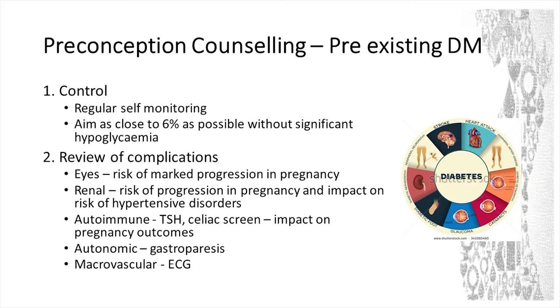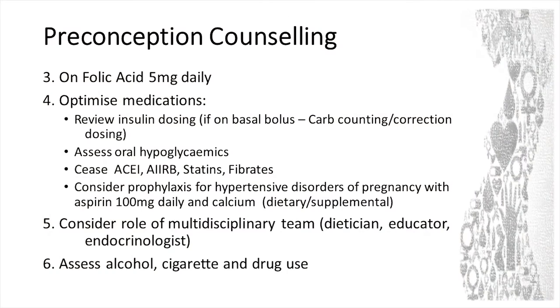Lastly, macrovascular — we don't tend to think about it in young women, but I've had at least one admittedly smoking, poorly-controlled, long-standing type 1 diabetic lady who had chest pain and a troponin leak at delivery and went on to have the workup and her triple bypass in the postpartum period. So it's not unheard of. It can be a bit tricky for them, so just think about it and look at their risk.